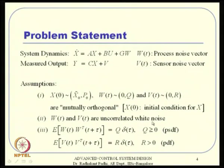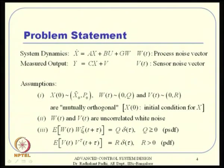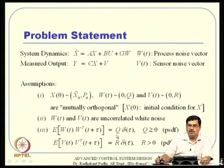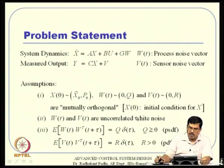We also assume that W and V are uncorrelated white noises — that is a fundamental backbone of Kalman filter theory. The noises are assumed to be white, meaning they are uncorrelated across time: E[W(t)*W(t+τ)^T] = 0 for τ ≠ 0. This is the definition of white noise — if I multiply the process noise at different times I get zero; only at the same instant do I get Q. W and V are also assumed to have zero mean.